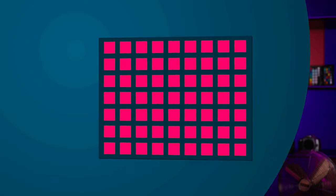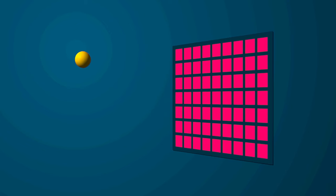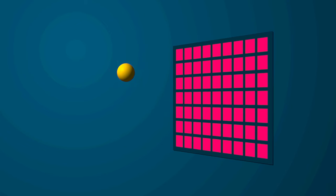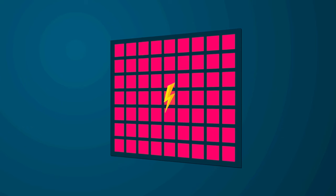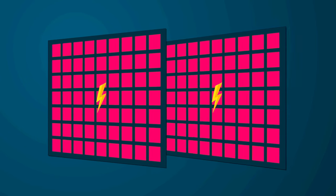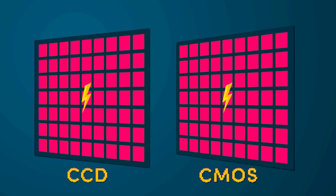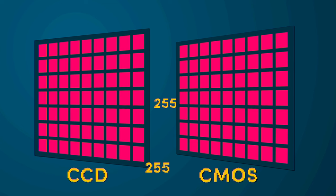CCD and CMOS are two types of image sensors used in digital cameras. The beginning of the process is the same in both: a light particle hits a photosensitive cell, producing an electric charge. The difference lies in how the sensor reads this data and converts it into a digital signal, and because of it, each one of them has its pros and cons.